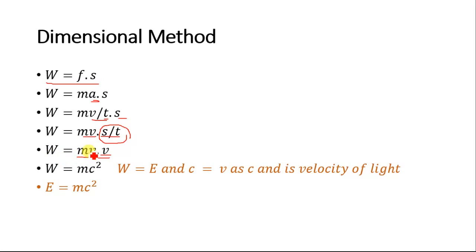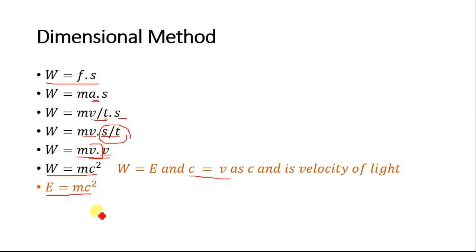Now we replace the velocity term v by the speed of light c, since c is also a velocity. We will get the new equation w is equal to mc square, where the work done is energy and we can write it as E is equal to mc square. This equation does not include the gamma term. In our second method, we will use relativity that will include the gamma term, which is one of the most valid equations used in physics.